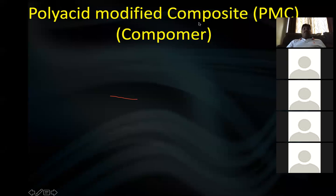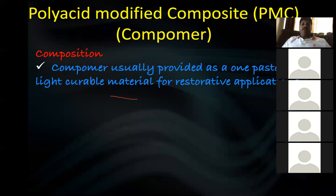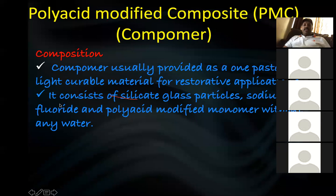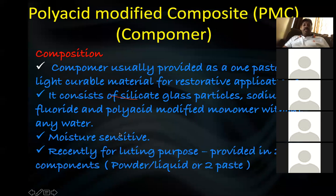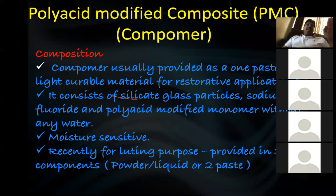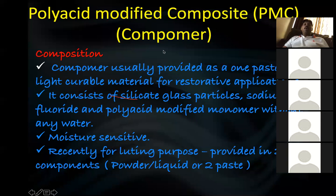The second type of resin modified GAC is Compomer — poly acid modified composite (PMC). It is provided as a good posterior light-cure material for restorative applications. It consists of silicate glass particles, sodium fluoride, and poly acid modified monomer without water. It is moisture sensitive. Recently it has also been provided for luting purposes. In this case, composite was modified by polyacid (GAC), rather than GAC modified by resin.